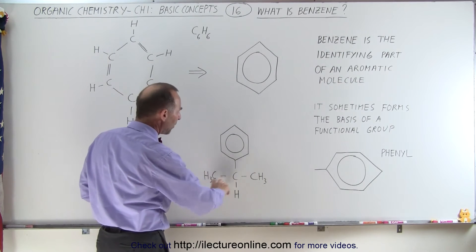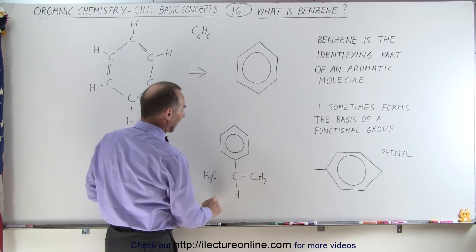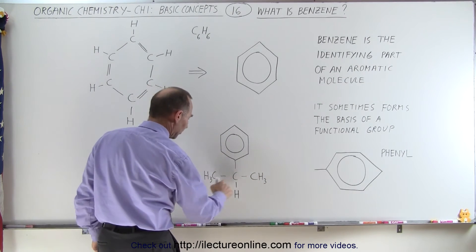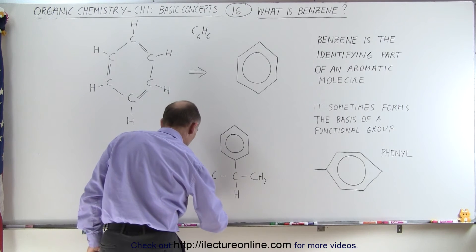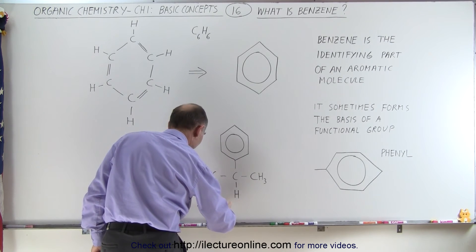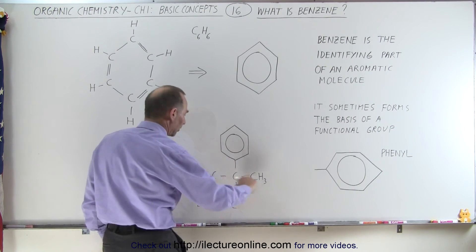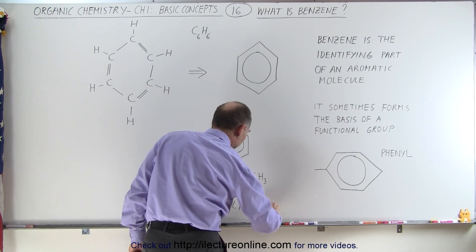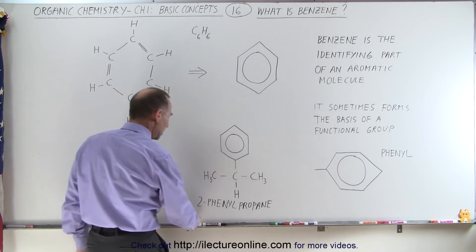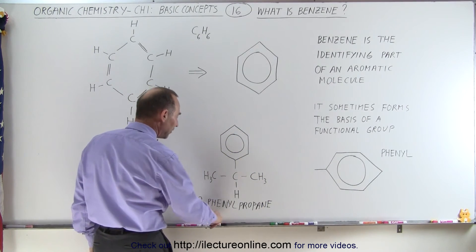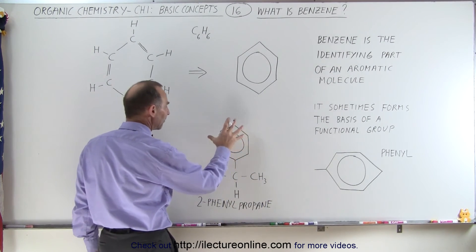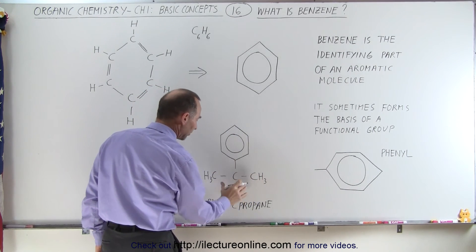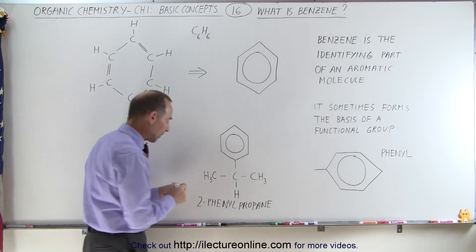Here we have propane, because there's three carbons. If we add a phenyl to it, we can call this molecule, and since it's connected to the second carbon, we call that 2-phenyl propane. This molecule is called 2-phenylpropane, because we have the phenyl functional group attached to the second carbon in the carbon chain of three, which is a propane molecule.